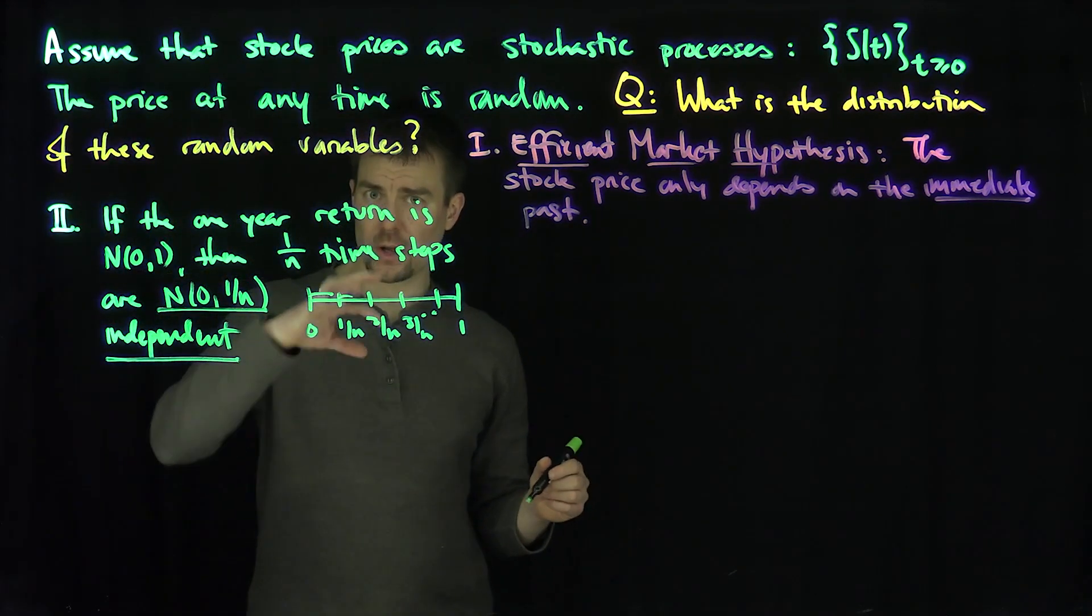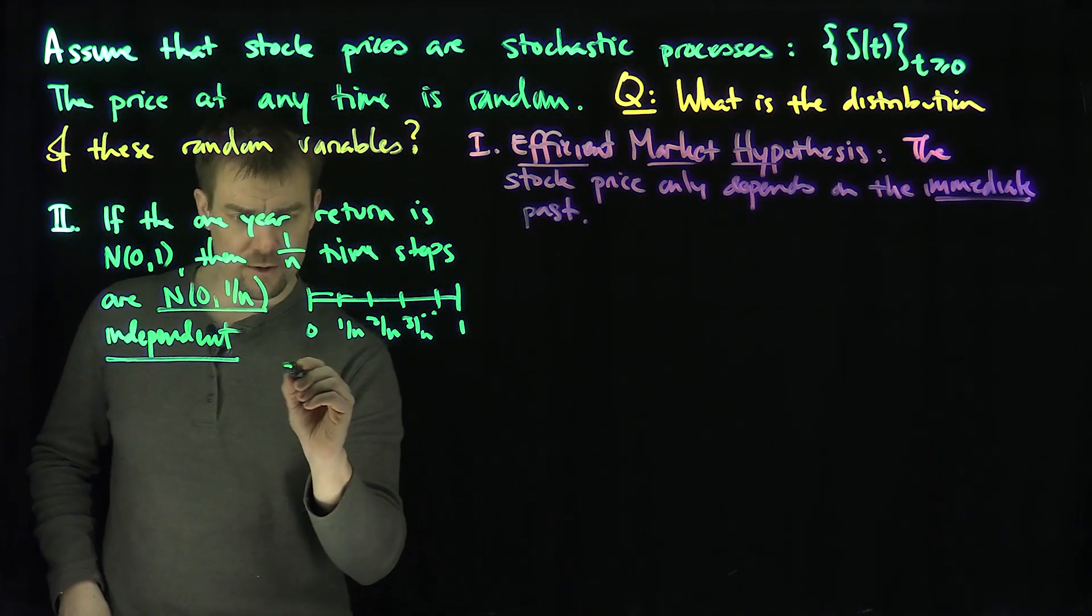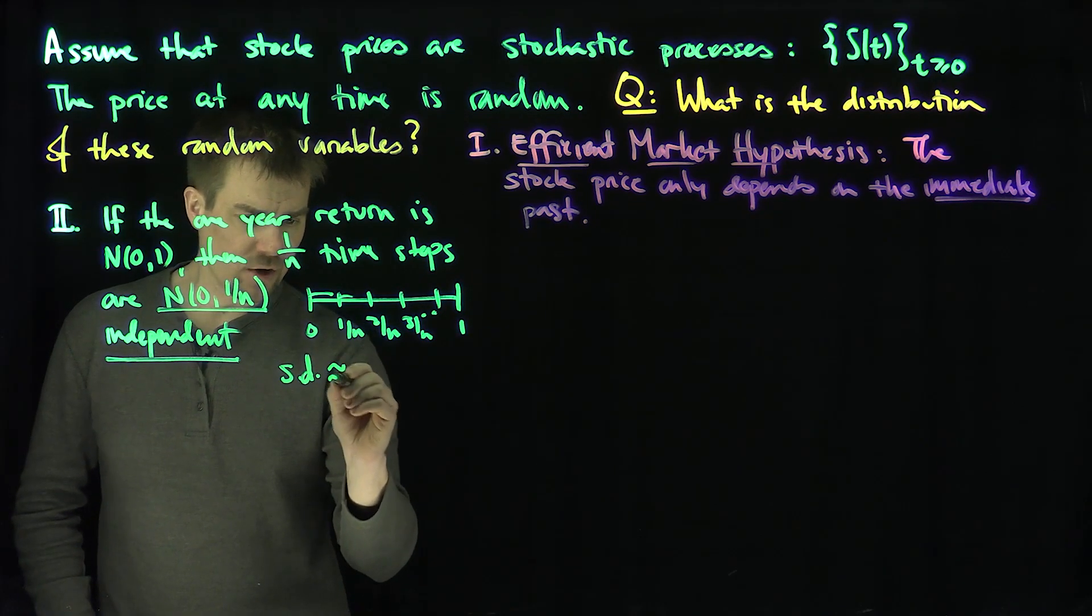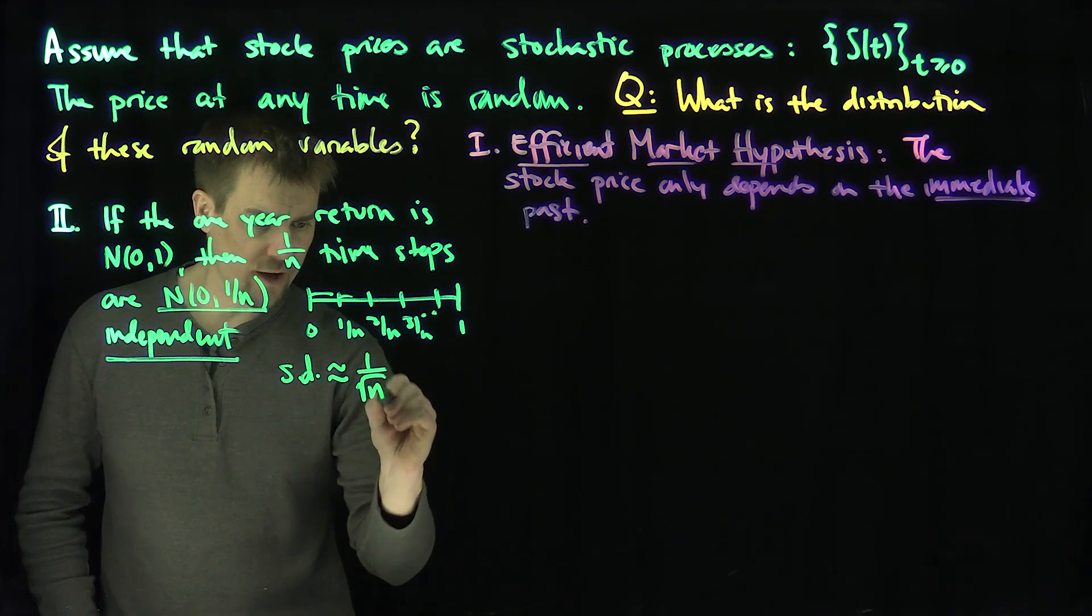So the standard deviation basically grows like 1 over n. The standard deviation is on a scale of 1 over the square root of n.